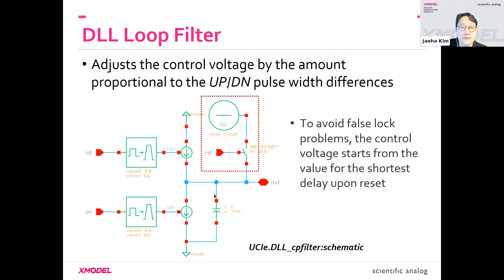The loop filter for the DLL is a charge pump, with a similar structure, except it uses only a capacitor without the series resistance.